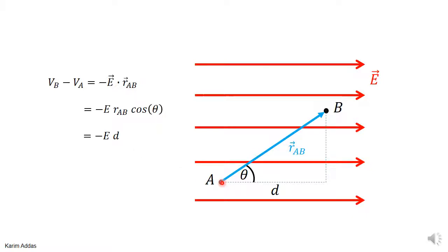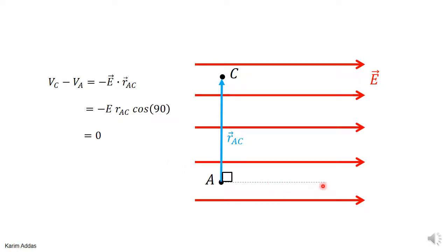We've shown that it doesn't depend at all on the particular path — if you choose any other path, when you add all the vectors dR, you still get the vector RAB, so the potential difference is always minus E times d. If you make the angle 90 degrees — going to point C perpendicular to the electric field — the potential difference is zero. This means that everywhere along the line perpendicular to the electric field, the potential is the same value.